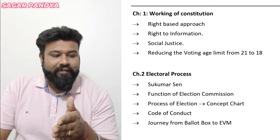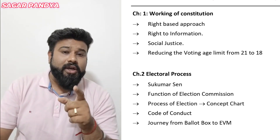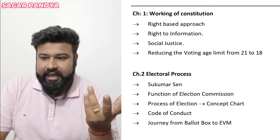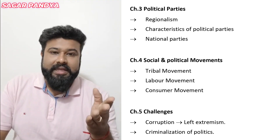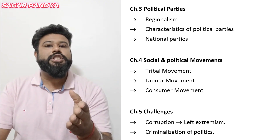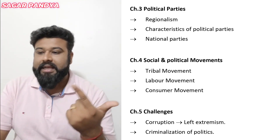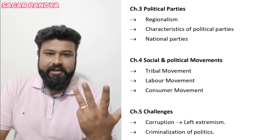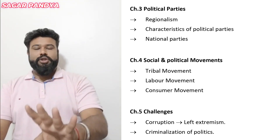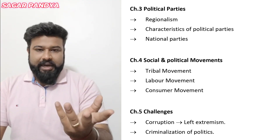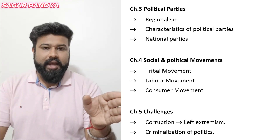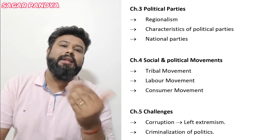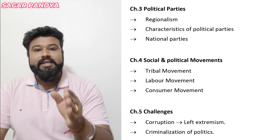Journey from ballot box to EVM is a trump card question — this answer was expected and it was asked, so if you go through it, it will be an easy task. The third chapter of Political Science is Political Parties. Focus on four answers: regionalism, national parties, characteristics of political parties, and concept chart. The fourth chapter covers social and political movements — focus on tribal movement, labor movement, and consumer movement.